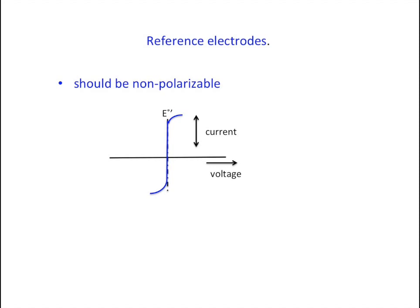So if we push it one way or the other from its resting potential, the ideal reference electrode will transfer electrons so readily that a new distribution of charges is never able to build up at the electrode solution interface.